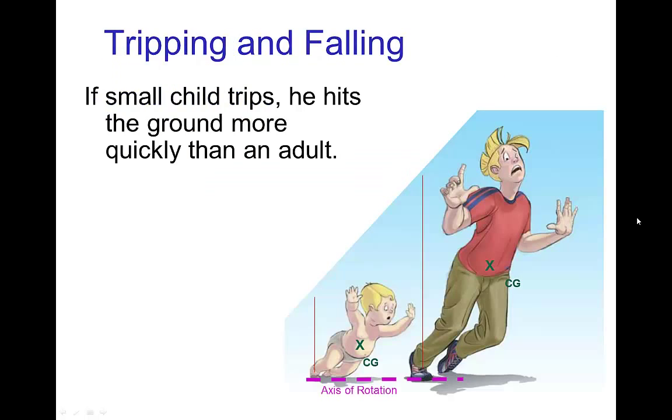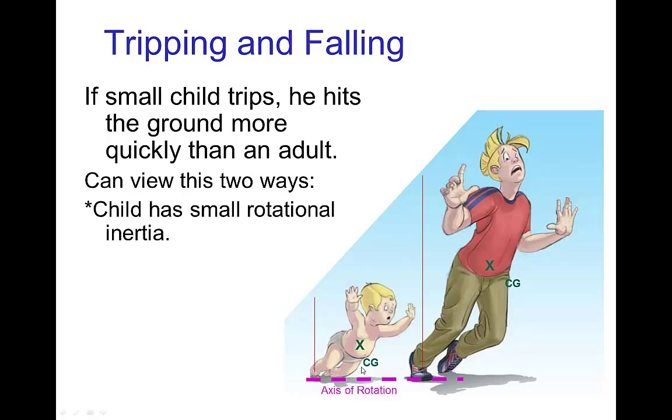Same sort of phenomenon happens when a character trips and falls. So the tall character, the adult would take more time than the short character. And two ways of viewing this. You can either think of the child as having a small rotational inertia and so it's going to tip over quicker.